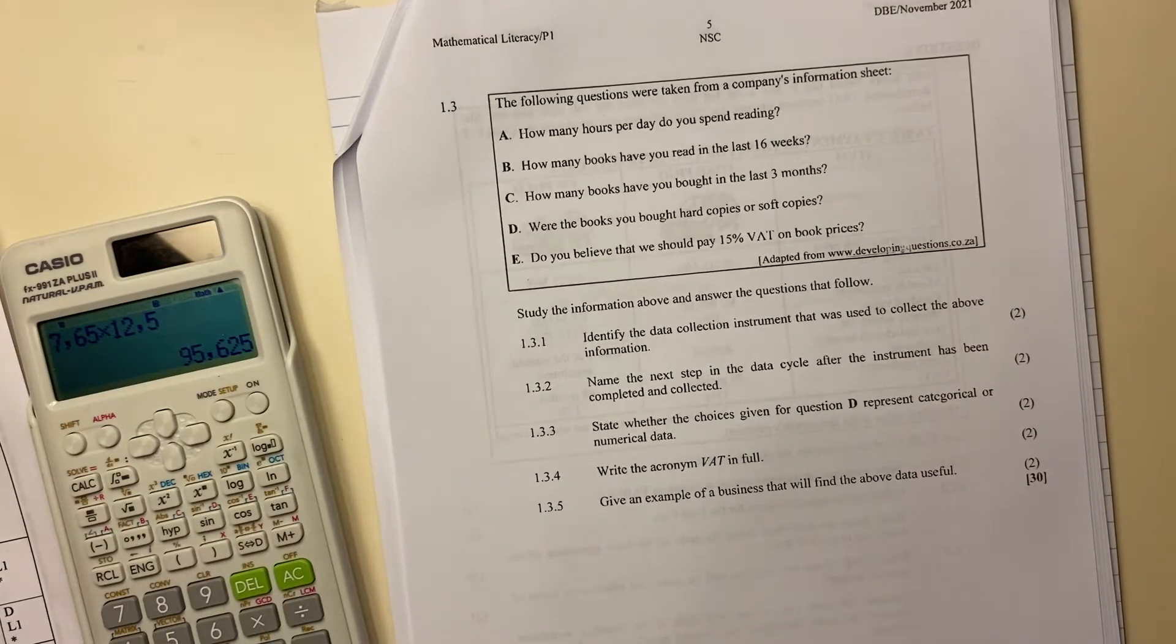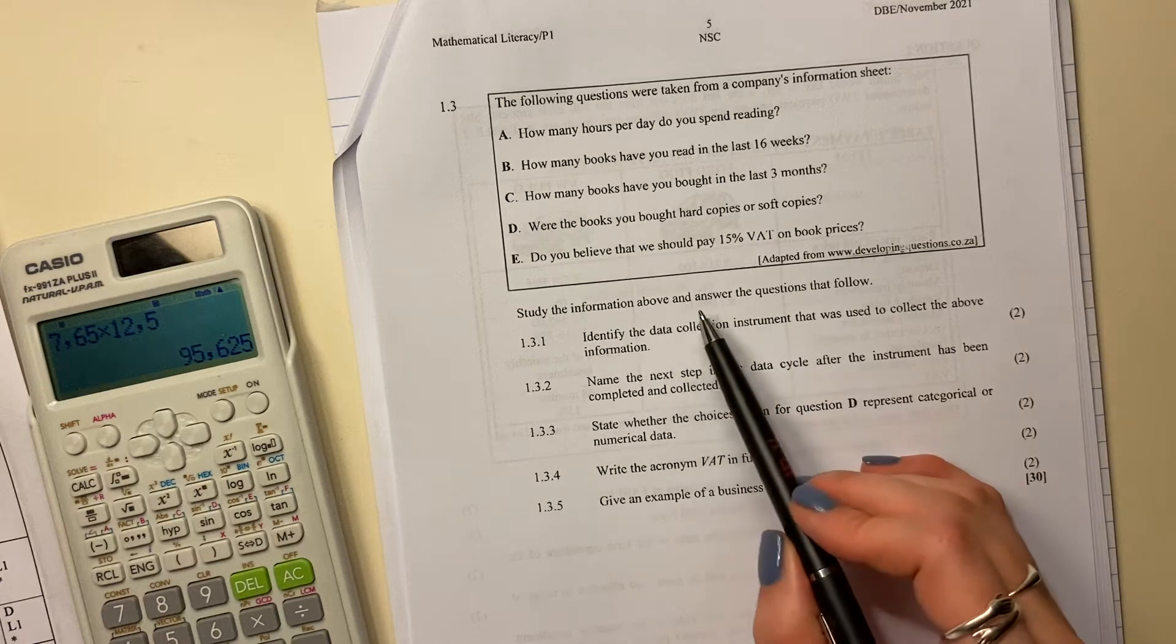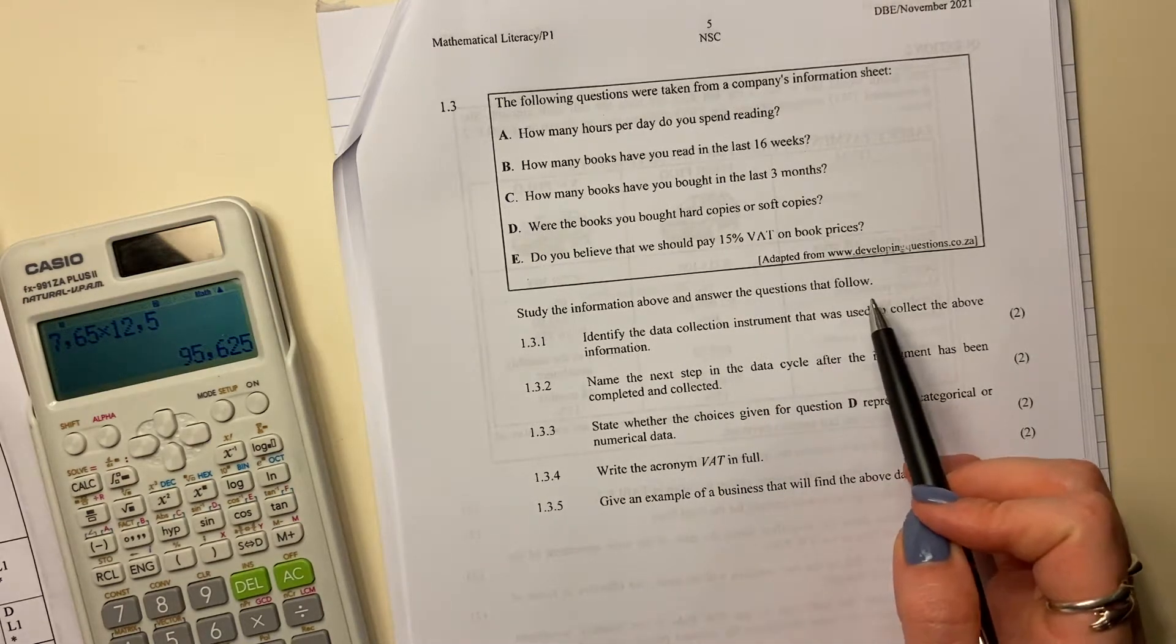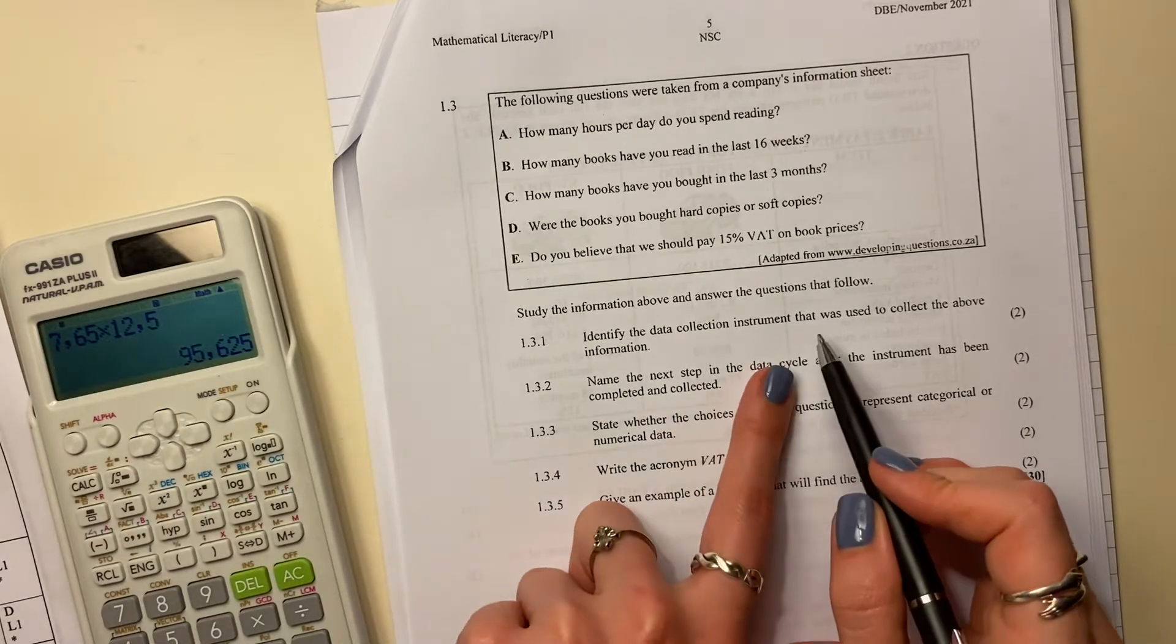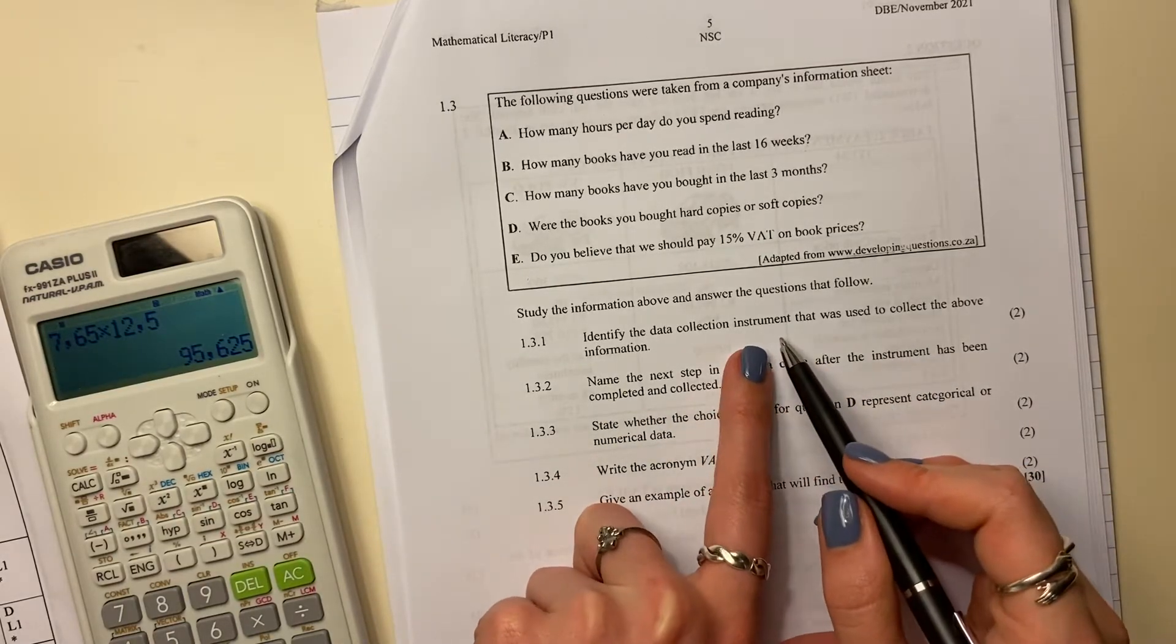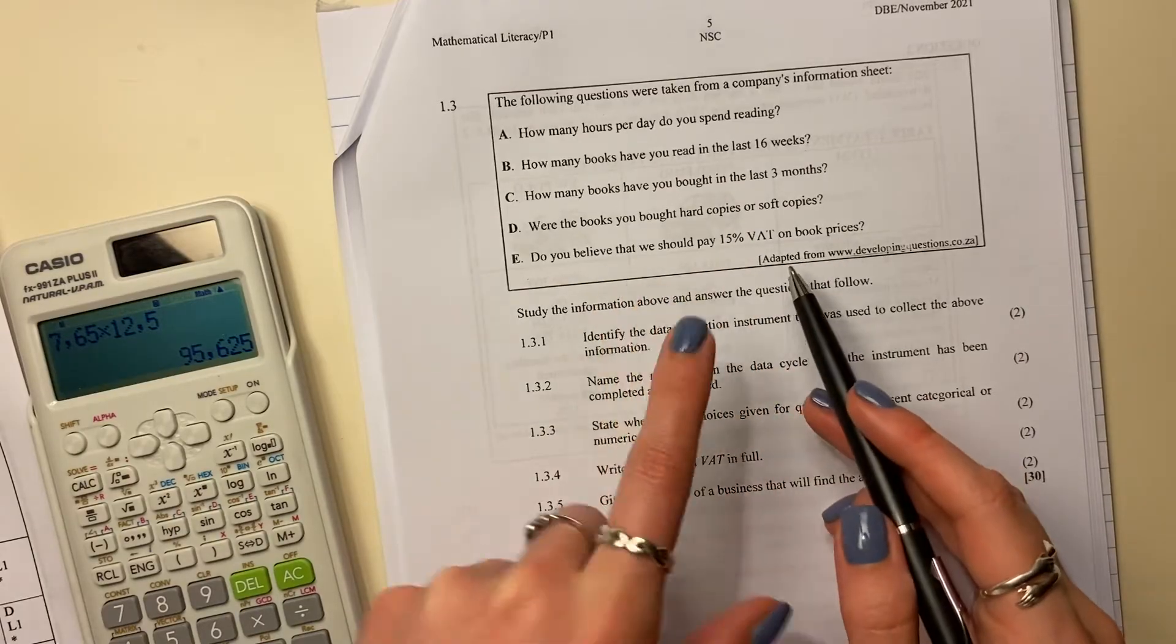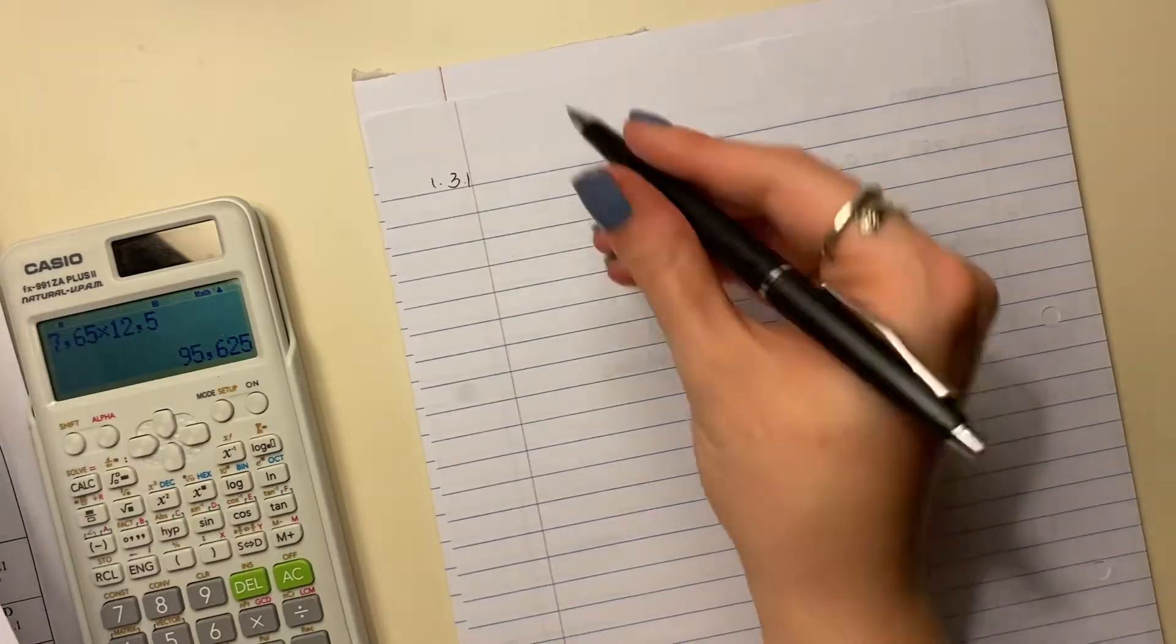Okay, so let's see the questions. Study the information above and answer the questions that follow. 1.3.1. Identify the data collection instrument that was used to collect the above. Instrument is kind of a weird word. It basically says like, what is this that they're presenting to us? It's a survey, right? So you can either say it's a survey or you say it's a questionnaire.